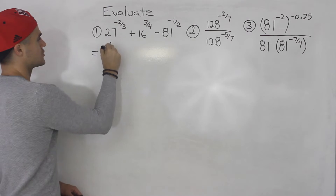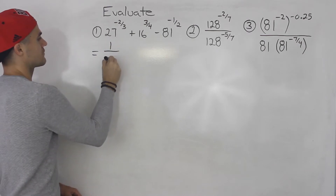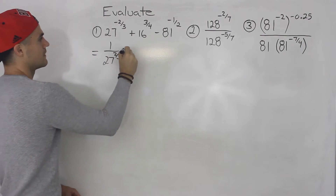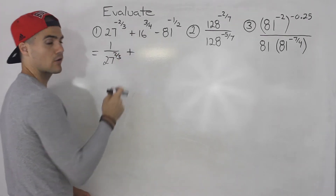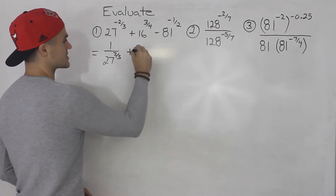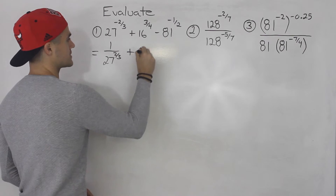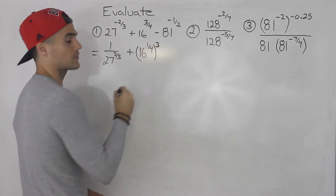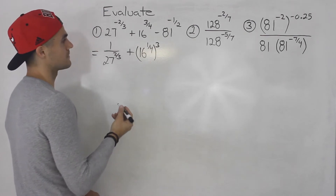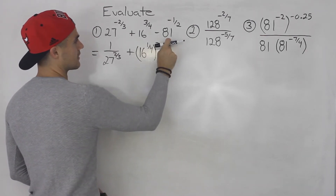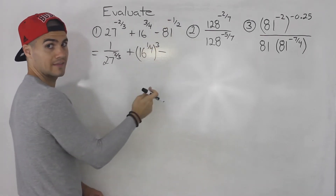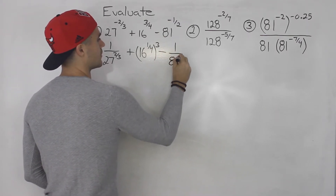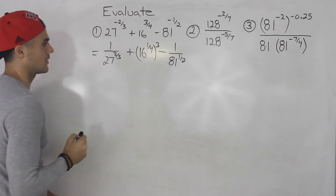For the first term, we change it to 1 over 27 to the power of 2 over 3 — negative exponent, bring it down. For 16 to the power of 3 over 4, I'm going to split that up into 16 to the power of 1 over 4, to the power of 3, like we did in the previous videos. And then 81 to the power of negative 1 half — bring that down to the denominator and change the exponent to a positive.